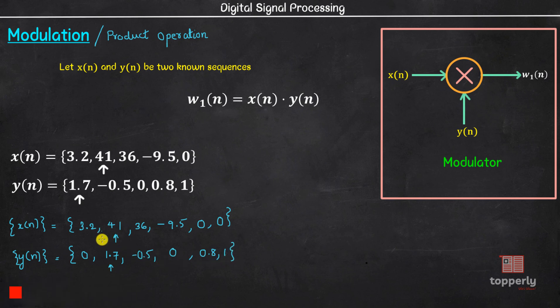Now the nth sample in each case can be multiplied and we get w1 of n equal to 3.2 into 0 which is 0, 41 into 1.7 which is 69.7, -0.5 into 36 which is -18, 0 into -9.5 which is 0, 0.8 into 0 which is again 0, and 1 into 0 which is again 0. So this is the modulated sequence of x of n and y of n.